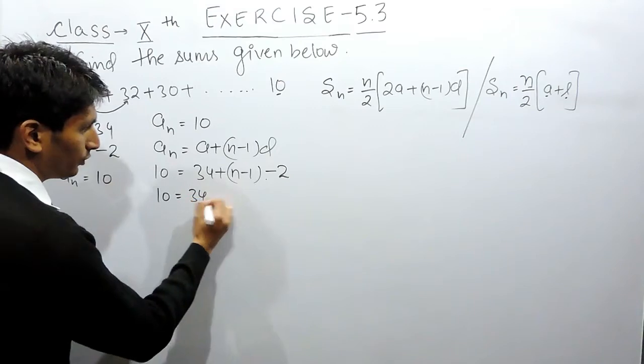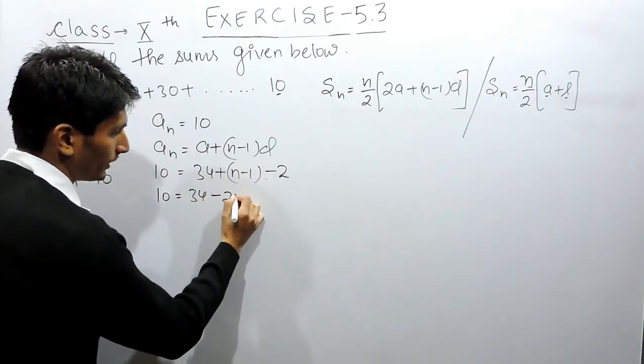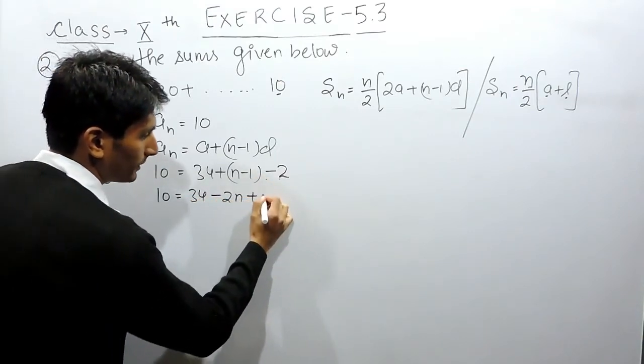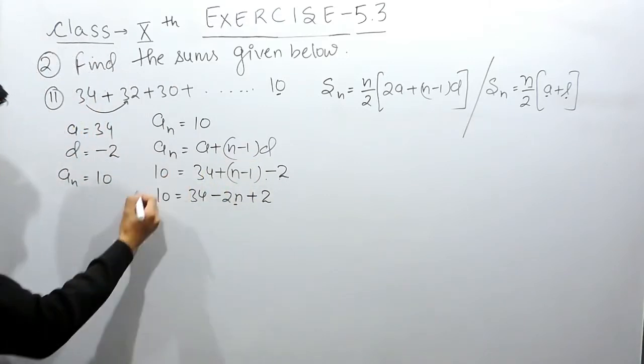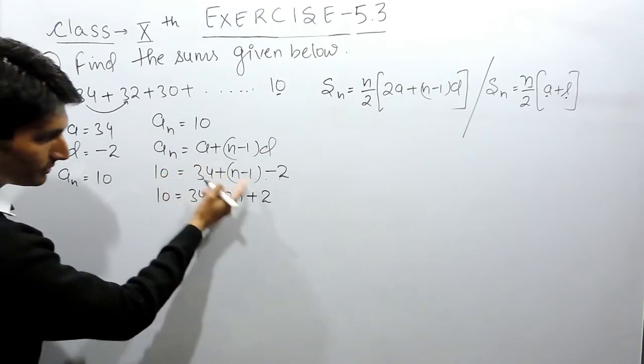The common difference is -2. Solving this: 10 = 34 + (n-1)(-2). This becomes 10 = 34 - 2n + 2.